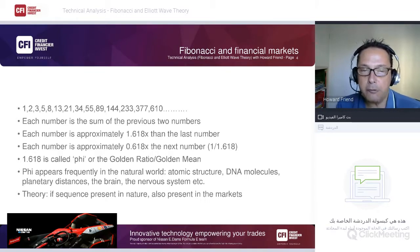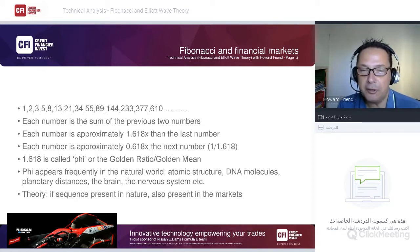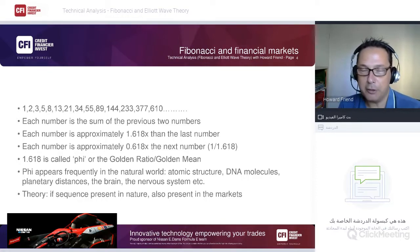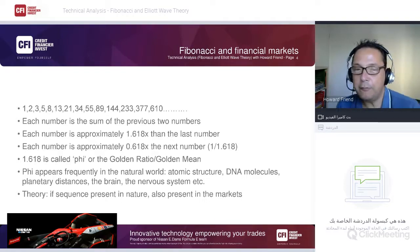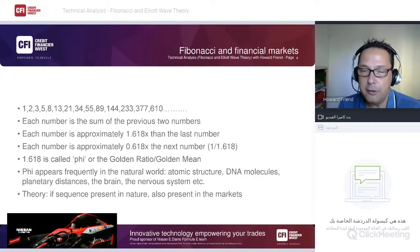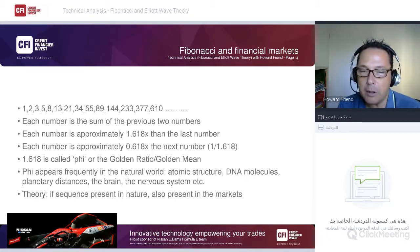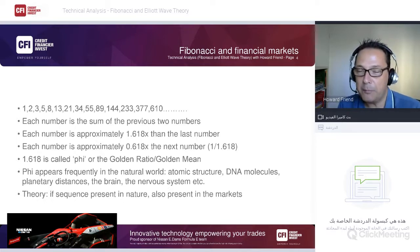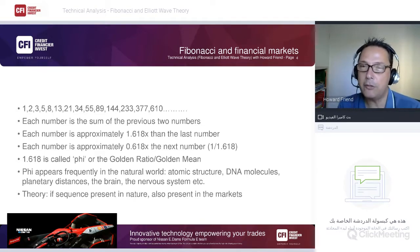Phi appears frequently in the natural world — atomic structure, DNA molecules, planetary distances, the brain, the nervous system — all over the universe. This magic number is relevant to financial markets because if it's present in nature, and nature governs mass psychology, then mass psychology drives financial markets.